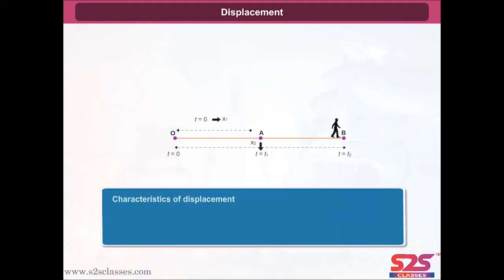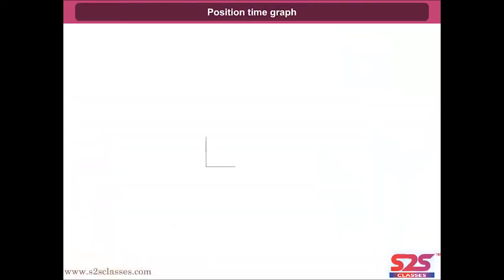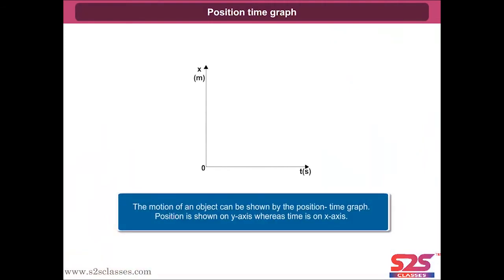Characteristics of displacement: displacement is a vector quantity. The displacement of a body is measured over a certain interval of time, and the displacement of a body may have a positive, zero, or negative value. The motion of an object can be shown by the position-time graph, where position is shown on the Y-axis and time is on the X-axis.